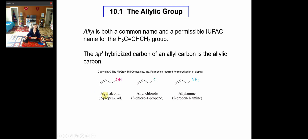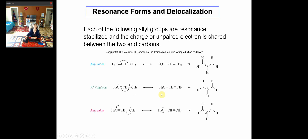This molecule is particularly called allyl alcohol. Similarly, if you have a chloride-based compound, it is called allyl chloride, and you have allyl amines. They have different types of systematic nomenclature. Moving on to resonance forms and delocalization in the allyl cation.